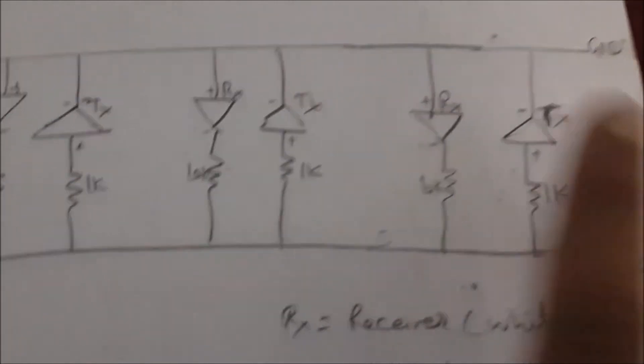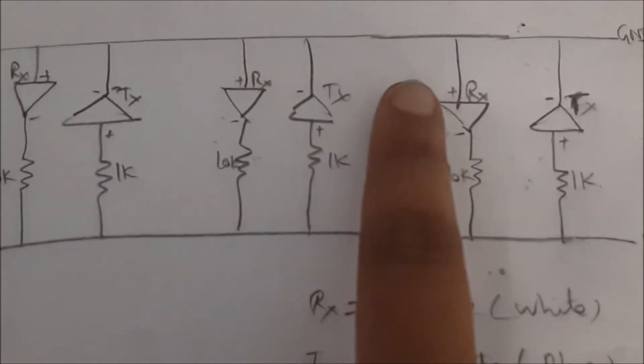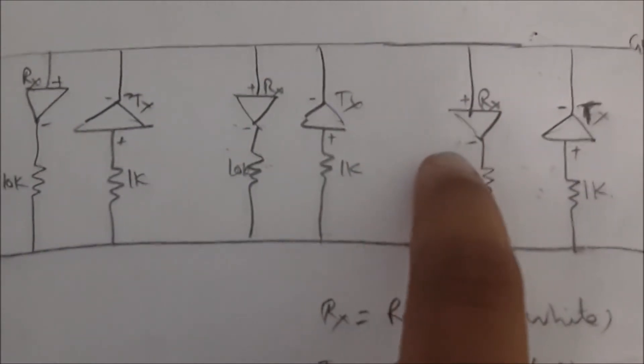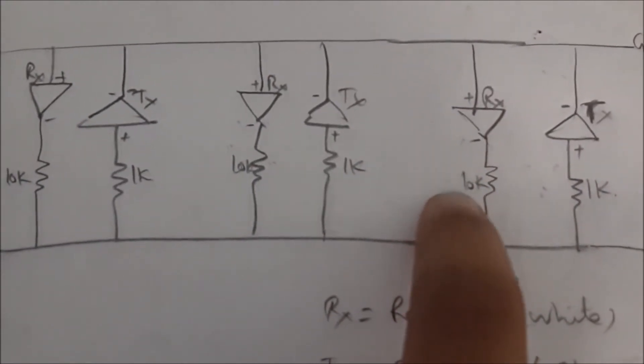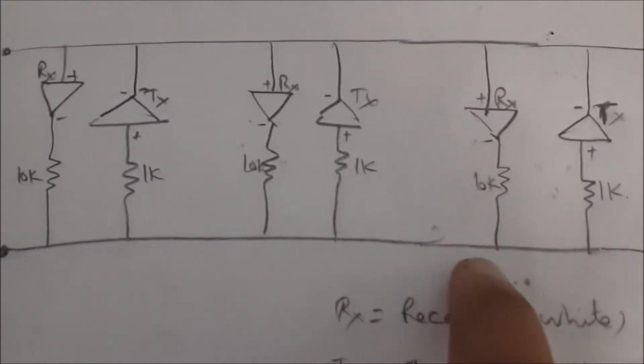For the receiver, the positive is connected to ground, and the negative is connected to one strand of the 10kohm resistor which is in turn connected to VCC.